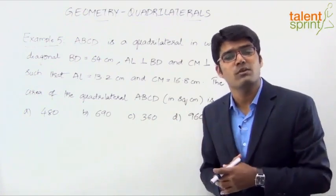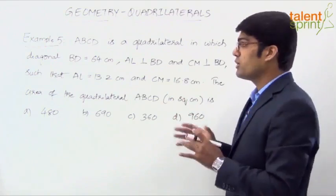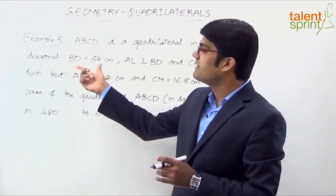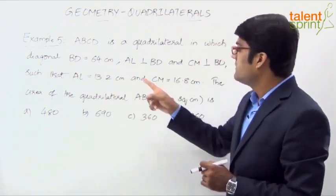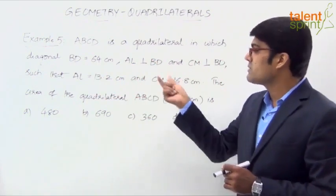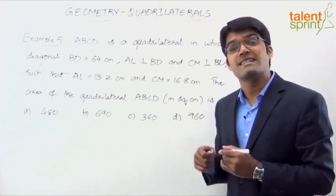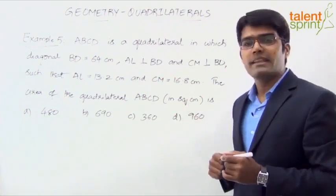The area of the quadrilateral ABCD in square centimeters is what we need to find. We need to find out the area of the quadrilateral ABCD from this given information. We have the length of the diagonal BD, we have to construct AL and CM perpendicular to BD, and the lengths of AL and CM have also been given. So let us try and draw this figure and understand what can be done to get the area.